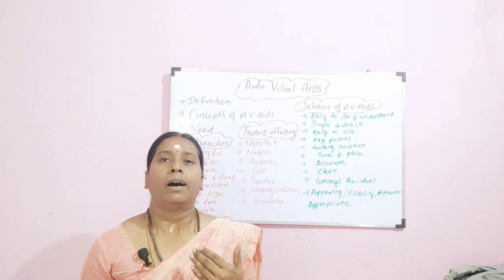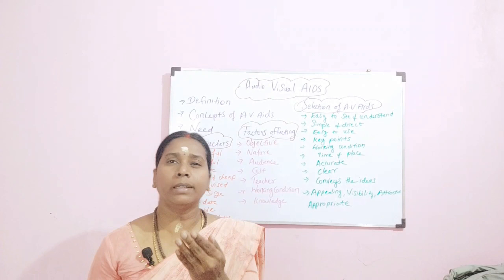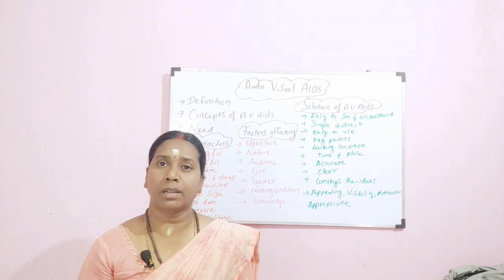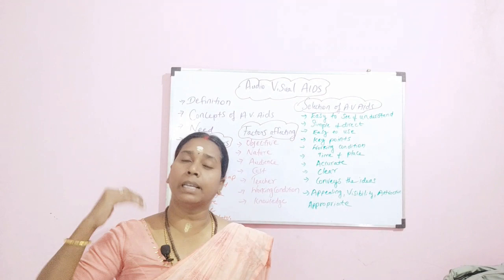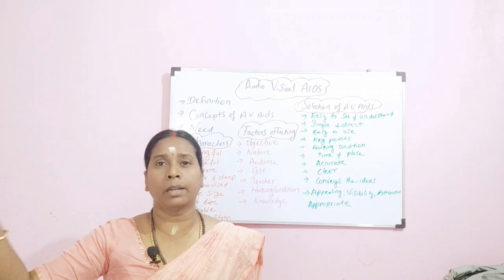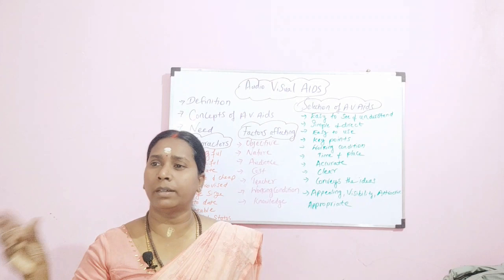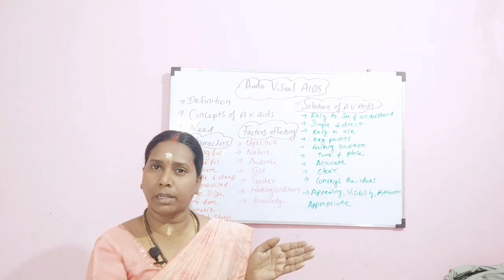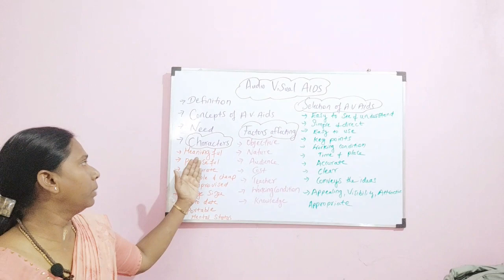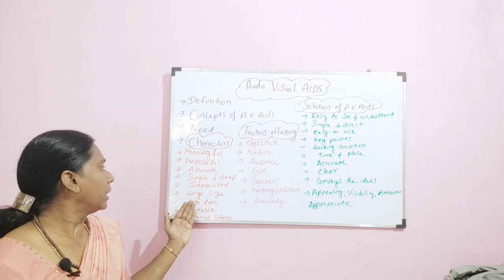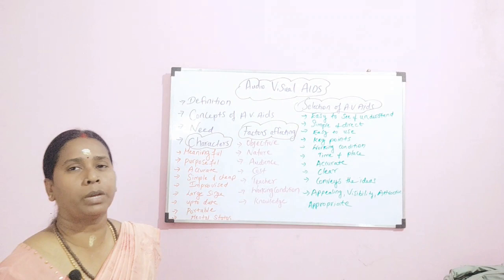Then the mental status — it is the understanding of the audience. Imagine the audience is an LKG child. You need something very large, a 3D image, a big and lively picture to make the child understand. In case it is a grown-up group, maybe you are doing health education for an antenatal mother, you can just tell or take it in a chart. These are the characters of AV-AIDS: meaningful, purposeful, accurate, simple and cheap, improvised, large size, updated, portable, and mental status.